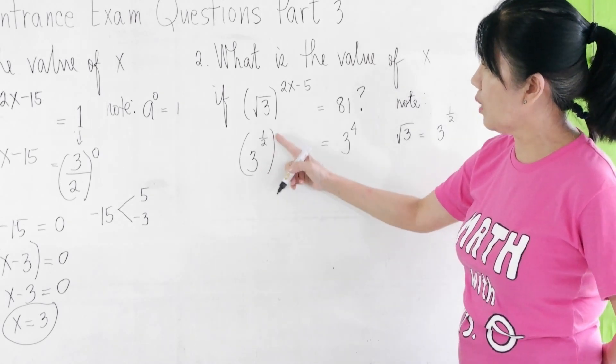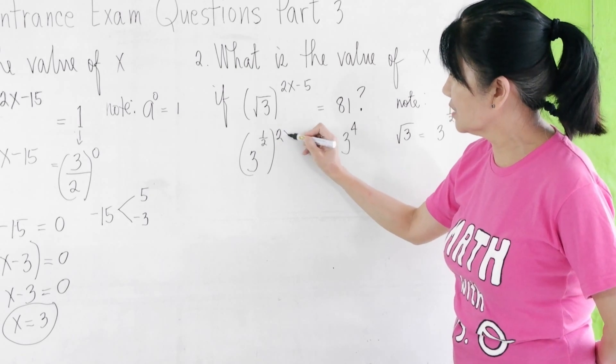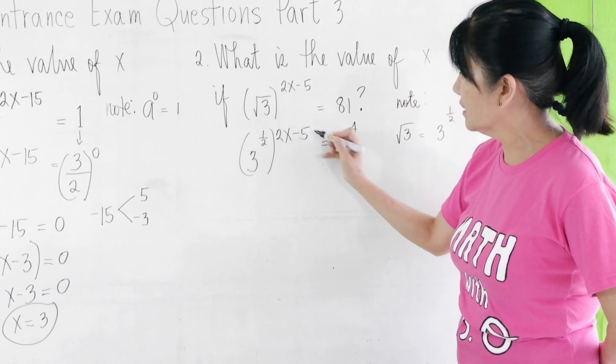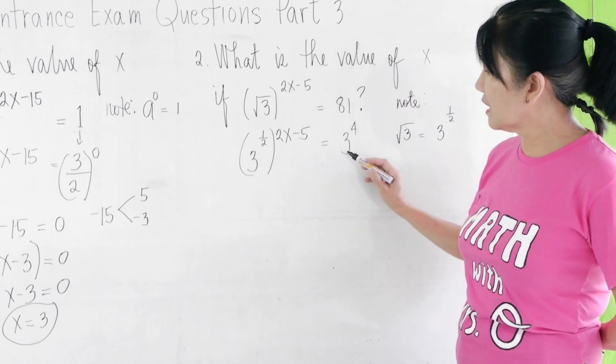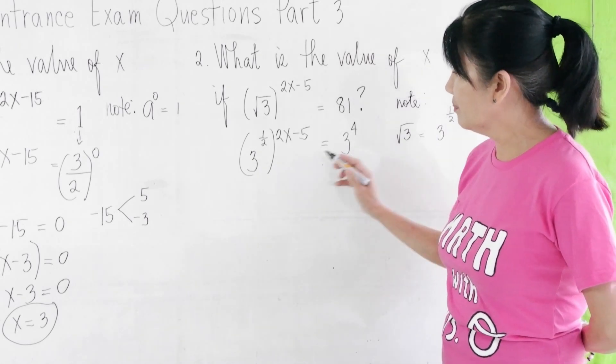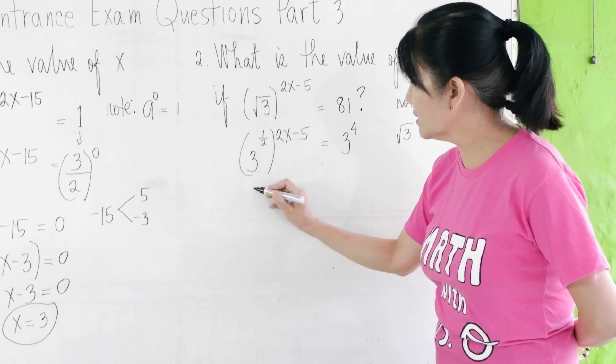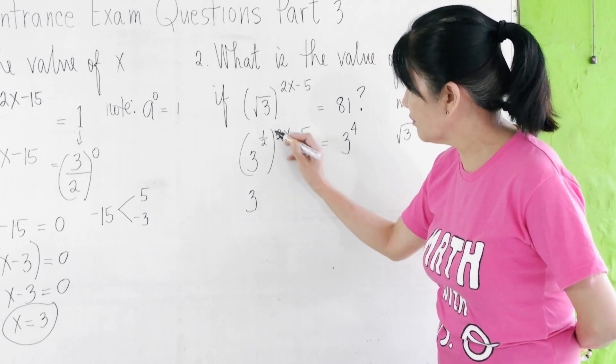So, 3^(1/2) is raised to the 2x - 5 is equal to 3^4. Now, the bases are the same. We can now equate the exponents. But we have to simplify first.